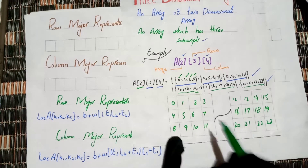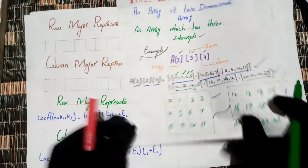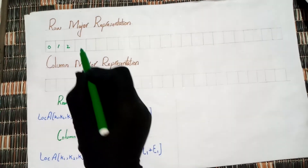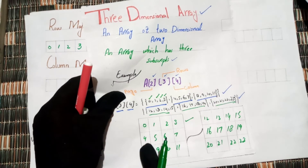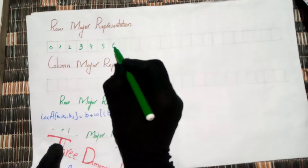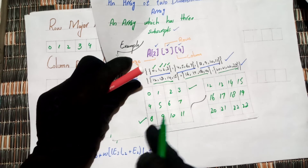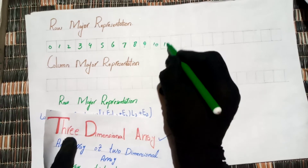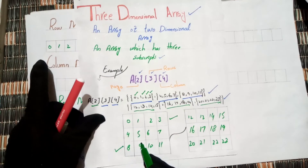For row-major representation, we complete the first matrix row by row. So the first row of the first array: 0, 1, 2, 3. Then the second row: 4, 5, 6, 7. Then the third row: 8, 9, 10, 11. This completes the first matrix.